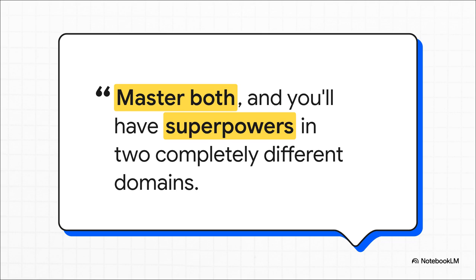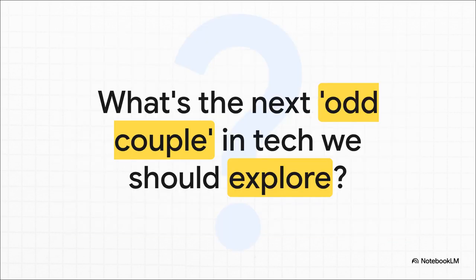And that's so true. Learning Go gives you the power to build the very backbone of the internet, and learning AutoHotKey gives you the power to bend your own computer to your will. Mastering both is a seriously powerful skill set. This combination of a high-performance systems language and a nimble scripting tool is just so potent. So I'll leave you with this question: what's another odd couple in technology that you think has a surprisingly powerful, complementary relationship? Let us know what you think. Thanks for tuning in.